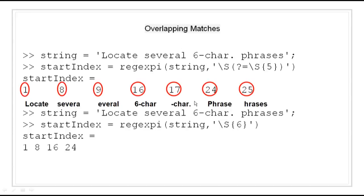Now, overlapping matches. Look ahead assertions do not consume any characters in the string, so you can use them to find overlapping character sequences. For example, we can find every sequence of 6 non-whitespace characters — meaning an initial character followed by 5 additional non-space characters. At index 1 we get 'locate' (L followed by O,C,A,D,E), at index 8 we get 'severa' (S followed by 5 characters), at index 9 we get 'everal' (E followed by 5 characters), and similarly at indices 16, 17, 24, and 25.